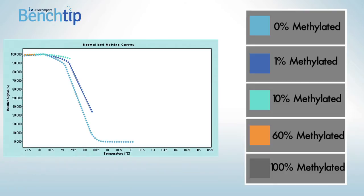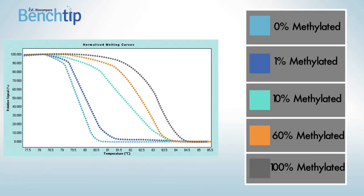HRM can also be used as an alternative to next-generation sequencing for methylation analysis. In the presence of controls and standards, the percent methylation of experimental samples can be determined based on melting curve analysis and melting temperature changes in the sequence of interest.